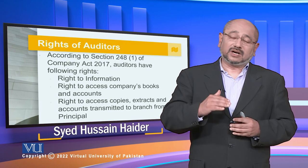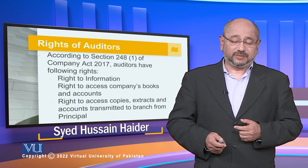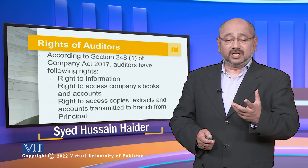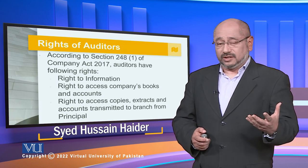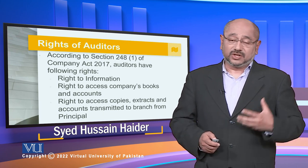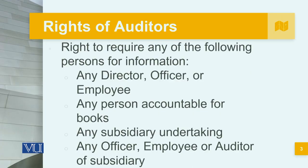All of these are the fundamental rights of an auditor. Based upon this section, they can require any document to be shown to them so that they can determine what has to be done about it. The right to acquire information from any director, officer or employee, any person accountable for books, any subsidiary undertaking, or any officer, employee or auditor of the subsidiary — anything linked as a stakeholder to the organization.